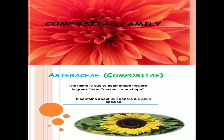Let's discuss the Composite family, also called the Asteraceae family. 'Aster' is a Greek word meaning star shape, and in this family the aster-shaped flowers are present. It contains about 950 genera and 22,000 species. In the world of flowering plants, one fourth of all flowers are from the Composite family.